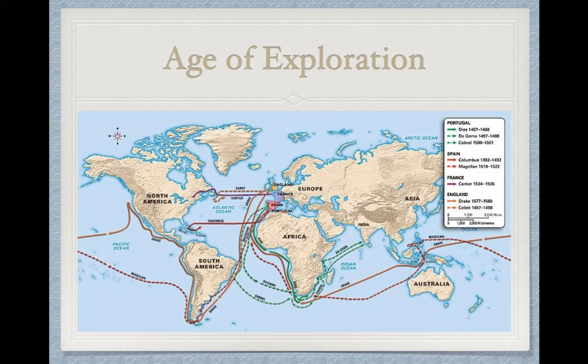Western Europe had the right geography, the right technology—especially maritime technology—to basically explore much of the world around the year 1500 and onwards. You can pause and take a look at this map, which shows some of the most famous expeditions of Western Europeans from about the year 1450 on, including people like Vasco da Gama, who was the first to sail all the way around the world, and Christopher Columbus, who was the first European explorer to actually land in North and South America.